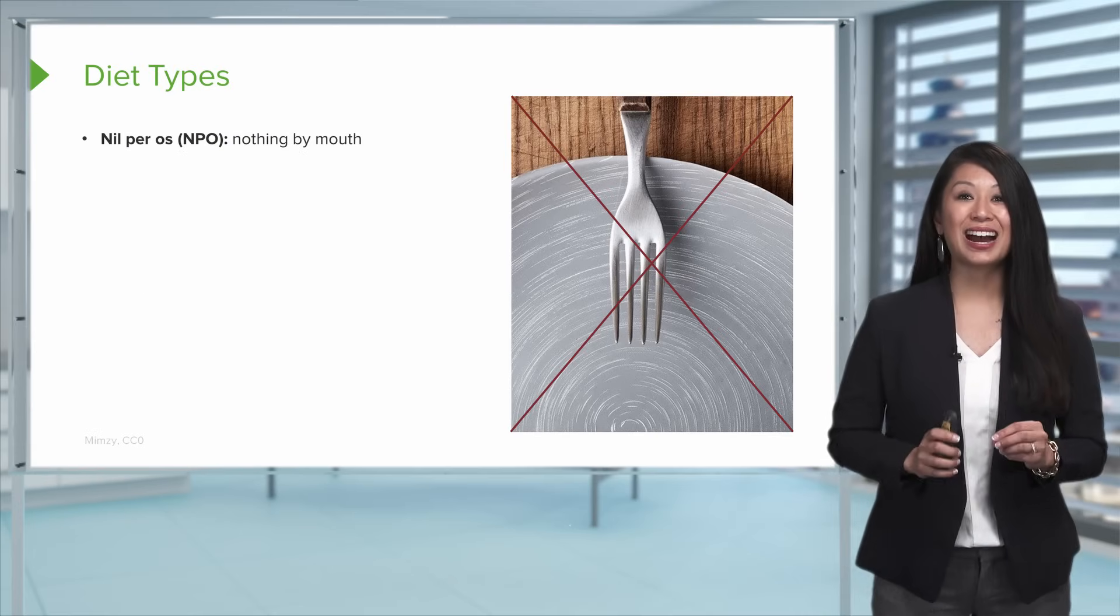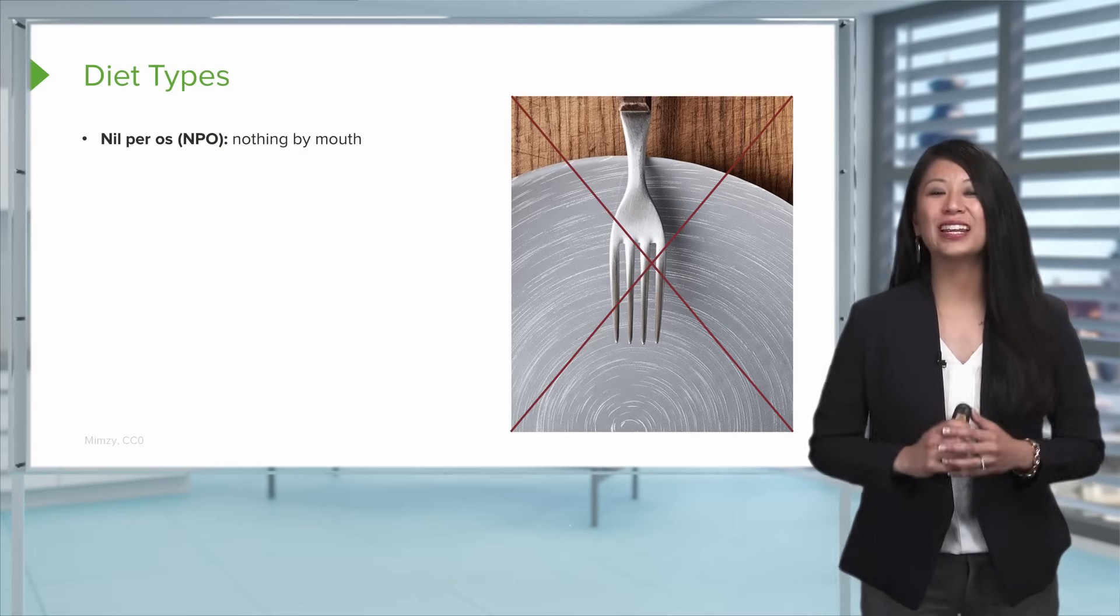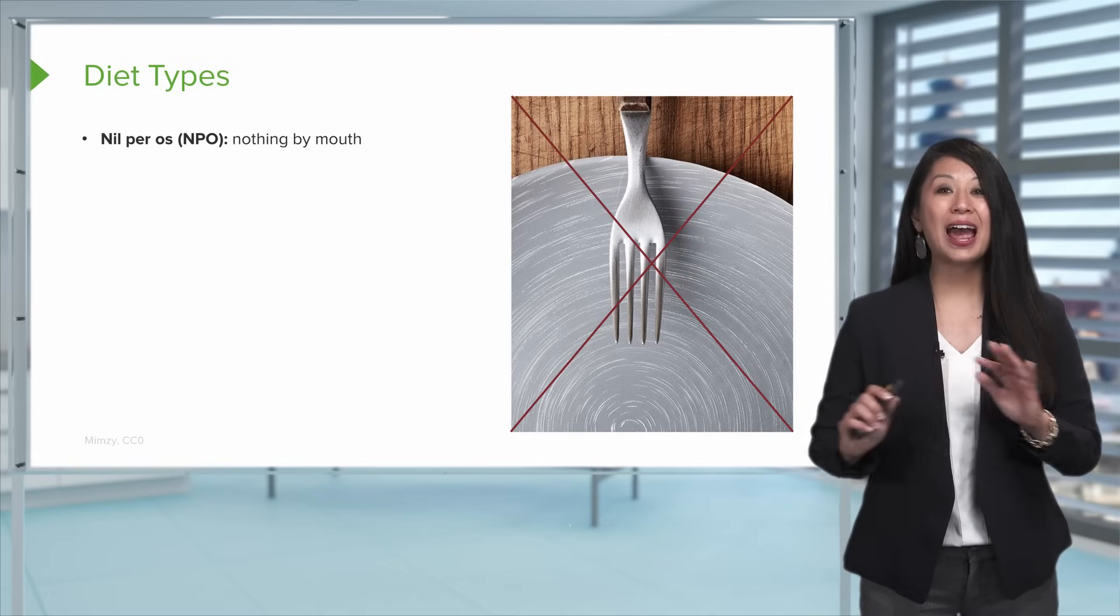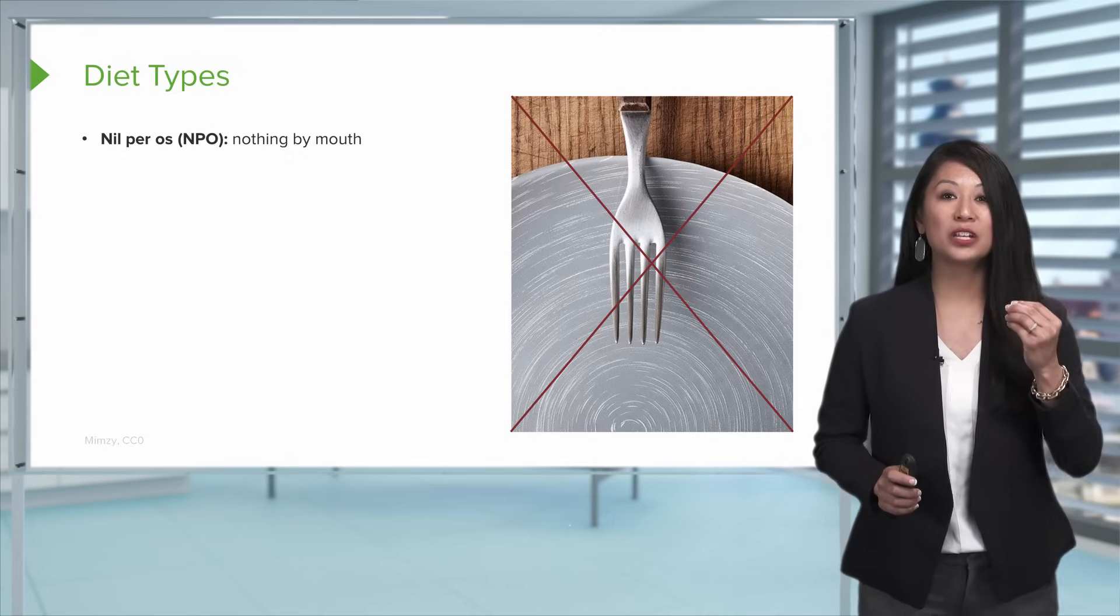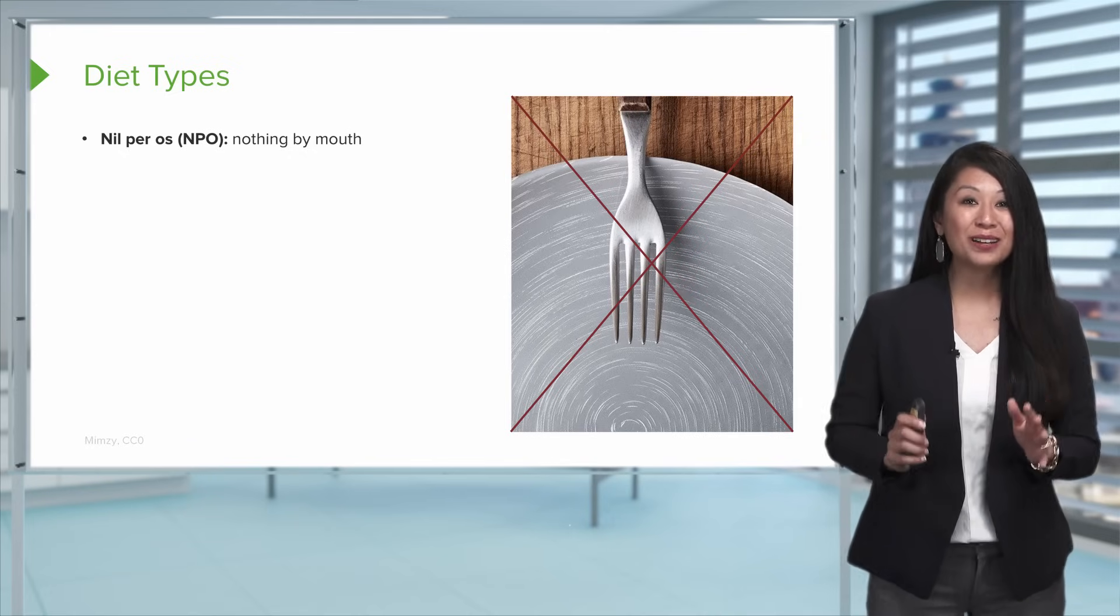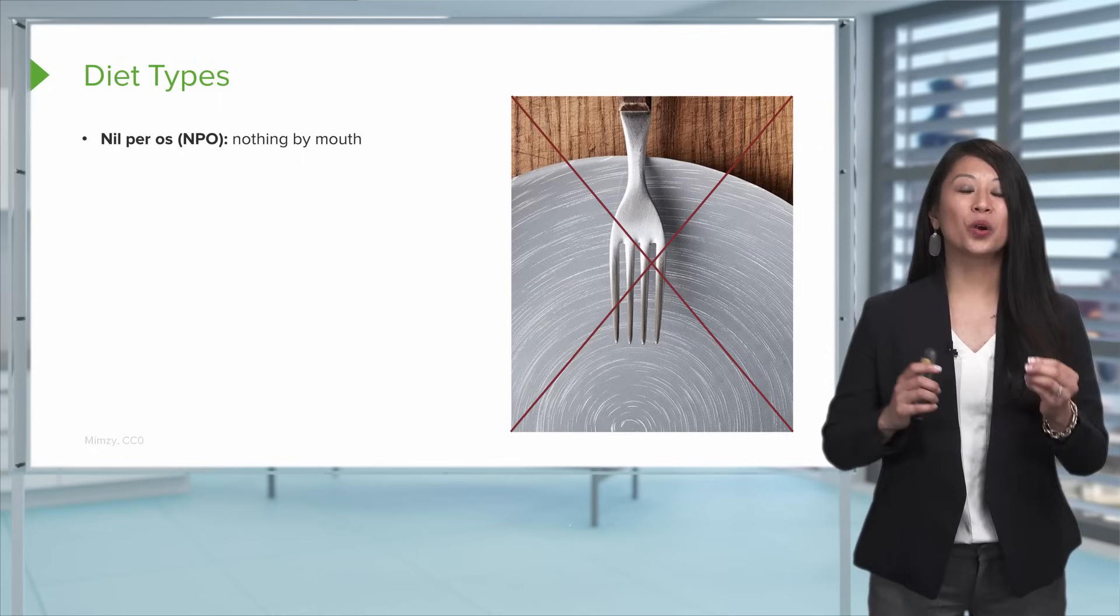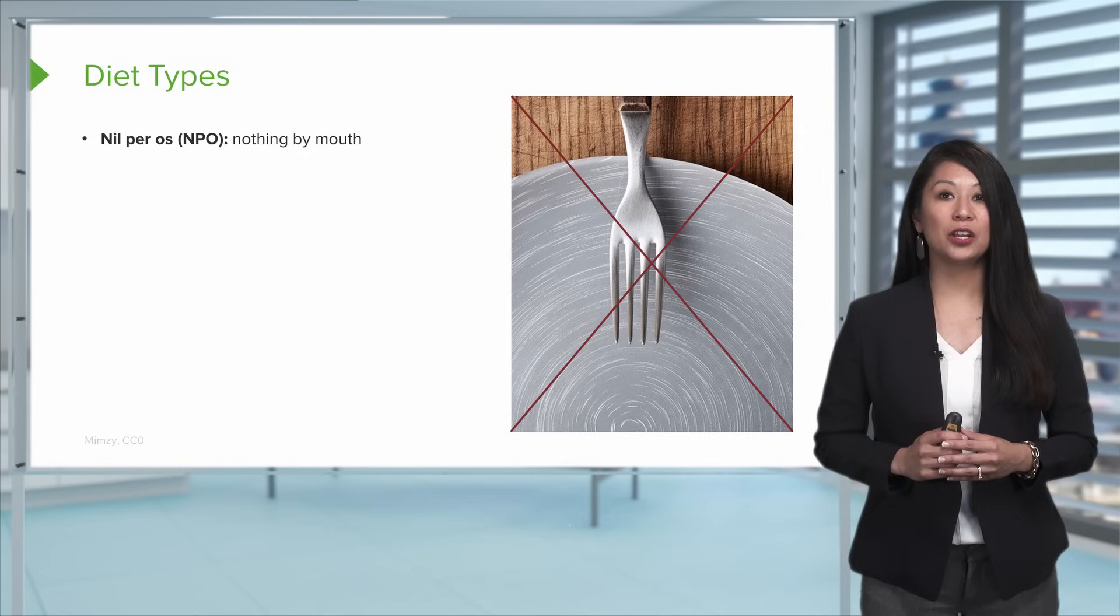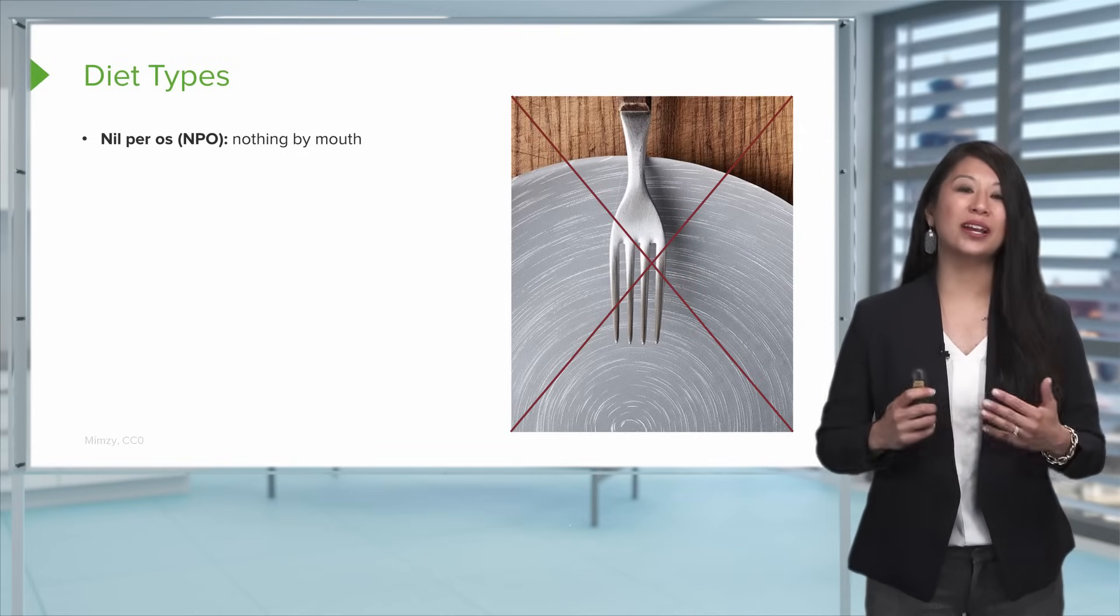Let's talk about some specific diet types. NPO is one that you're going to commonly hear as a nurse, otherwise known as nothing by mouth. This absolutely means we don't want anything to eat or drink down the patient's oral route. Just be conscious as a nurse, because sometimes the physician's order may say NPO or nothing by mouth except for meds. If you're going to give medications and you see the order for NPO, make sure you look at the order and clarify.